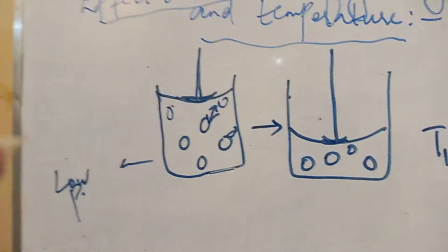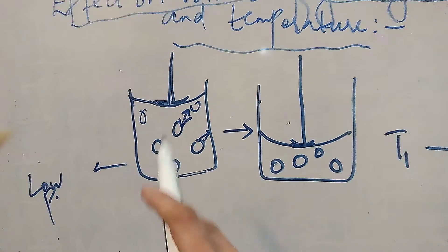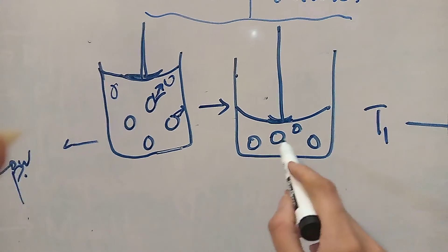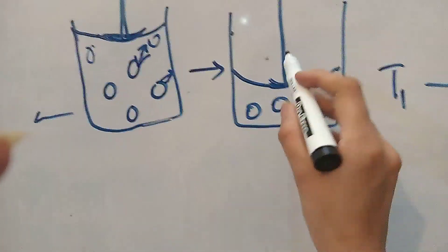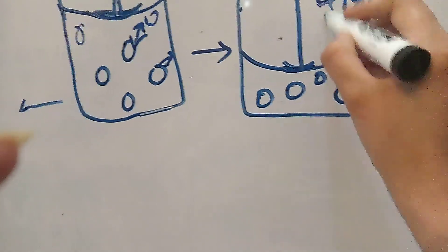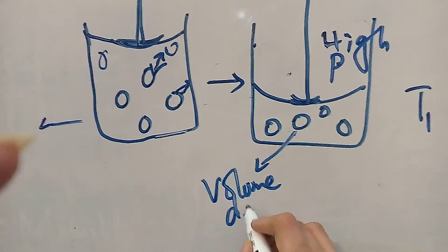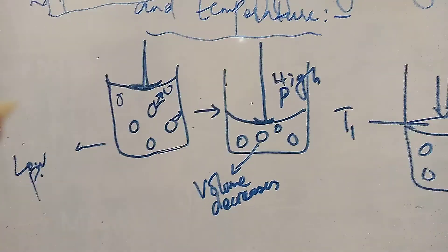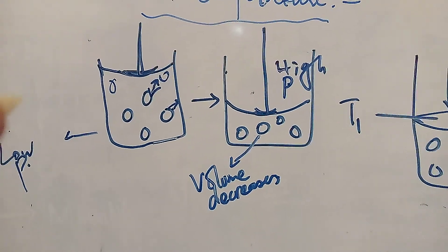If we increase the pressure, you can see in this diagram, the particles will come close to one another and collide more efficiently. When we increase the pressure to high pressure, the volume of the gas will decrease. Particles collide with one another more effectively and the rate of collision increases, so the volume of the gas decreases.